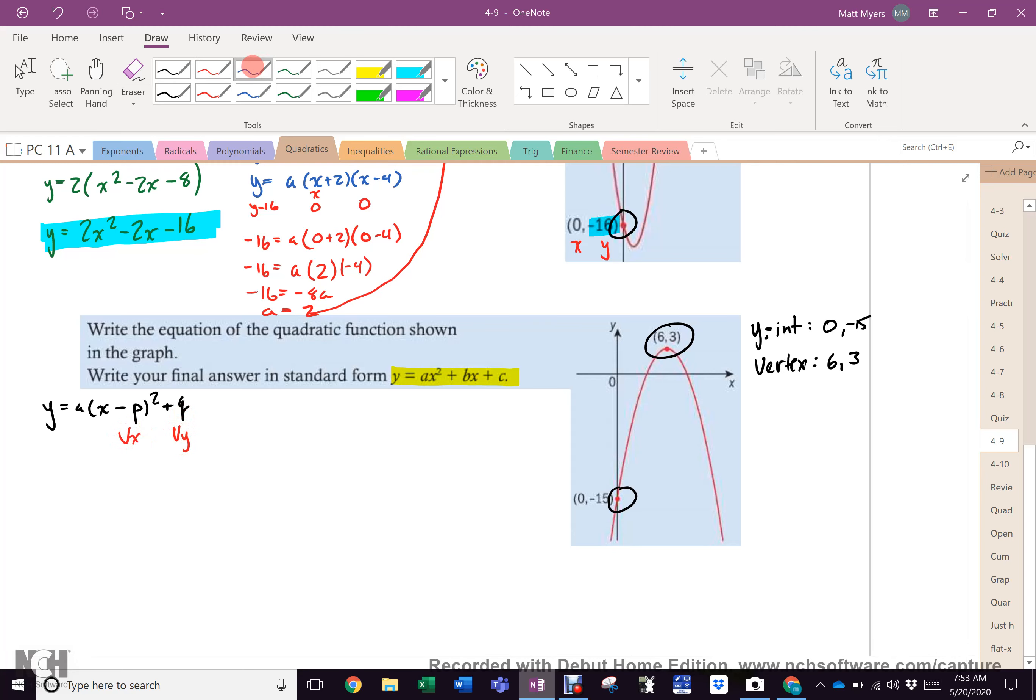So, all we do is fill it in. y equals a(x - 6)² + 3. And then, it's exactly like up here. Here, we have an x and a y in our y intercept. x was 0, y was -15. So, all we do is we fill it in. And we do the work. -15 equals a(0 - 6)² + 3. -15 equals 36a + 3. Bring that over. -18 equals 36a. A equals -1/2.